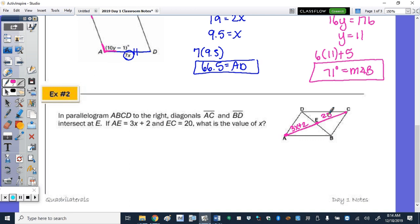Well, I know that the diagonals bisect each other. So diagonal DB just cut AC in half. So AE is congruent to EC. So their lengths, 3x plus 2, are equal. Subtract the 2, we get 3x equals 18, divide by 3, and x is 6.